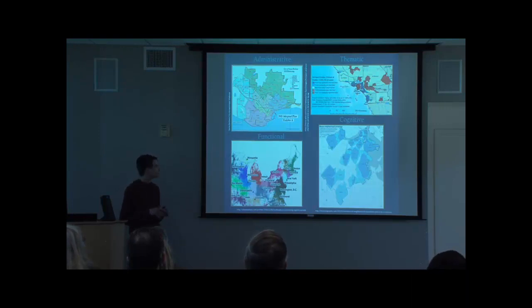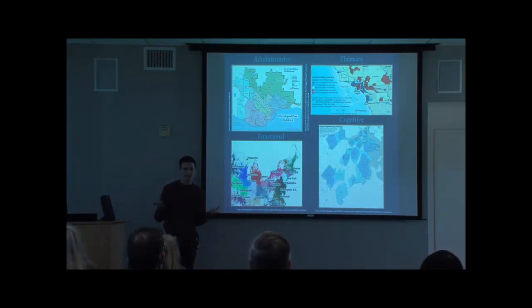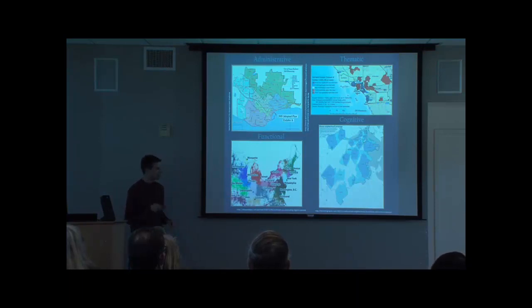We have functional regions, which are based on linkages, such as commuting patterns shown here. And we also have cognitive regions, which are produced by informal perceptions and conceptions in one's mind, such as my neighborhood or downtown. In this example, we have neighborhoods of Boston as perceived by their residents.